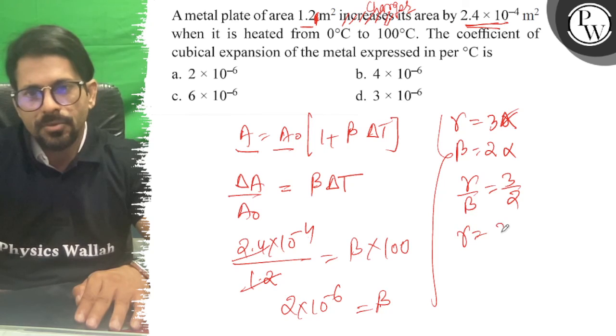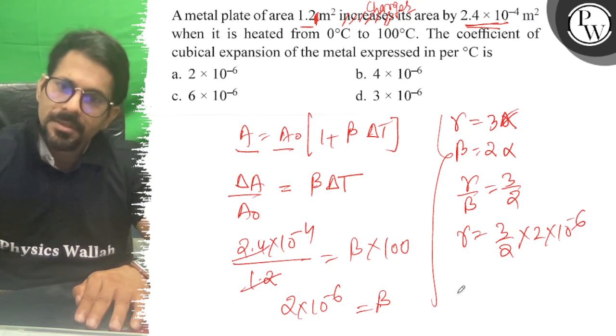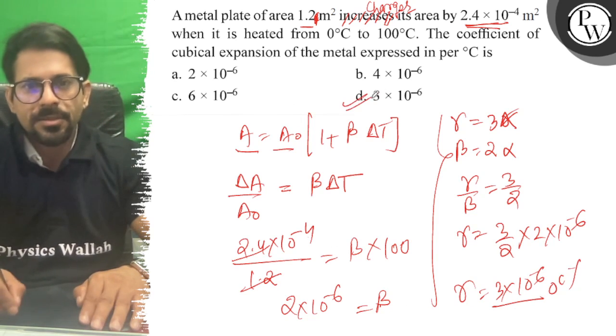So γ equals 3/2 times β, where β = 2×10⁻⁶. Therefore γ = 3×10⁻⁶ per degree Celsius. The right answer to this question is D. All the best.